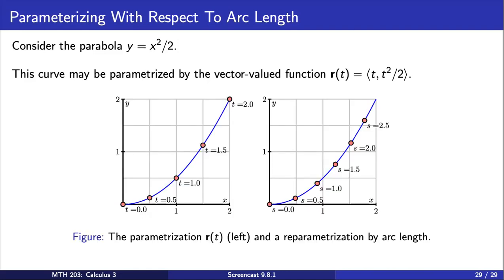Here, this parameterization is graphed on the left. Notice that as we increment values of t, the points are not equally spaced on the curve. A more natural parameter describing points along this space curve is the distance traveled as we move along the parabola starting at the origin.